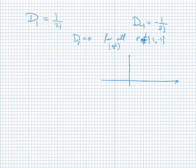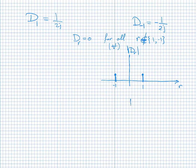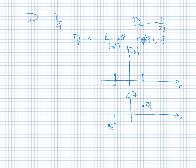To plot the magnitude of D_r: the magnitude is 1/2 at R = −1 and 1/2 at R = 1, and zero everywhere else. For the phase: at R = 1, D_1 = 1/(2j) gives a phase of −π/2; at R = −1, D_{−1} = −1/(2j) gives a phase of +π/2.